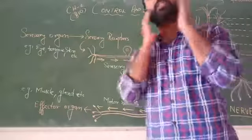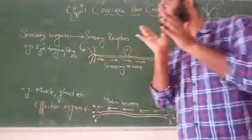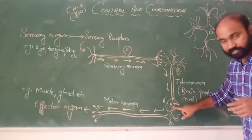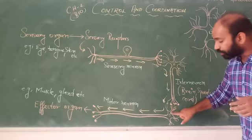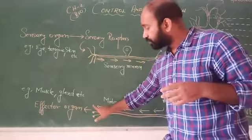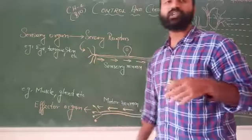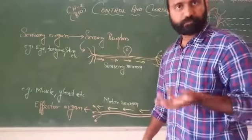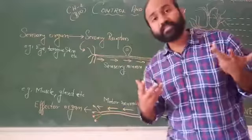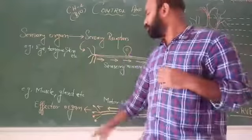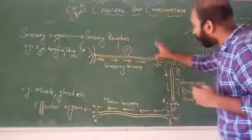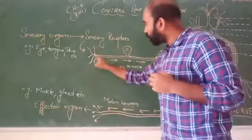So that motor neuron again receives the signal - the dendrite receives the signal, then dendron, and the plasma membrane carries it to the nerve end. From the nerve end it gives the signal to the effector organ, maybe salivary gland for example, and what is the effect? Saliva is released. So that command is given to the effector organ.